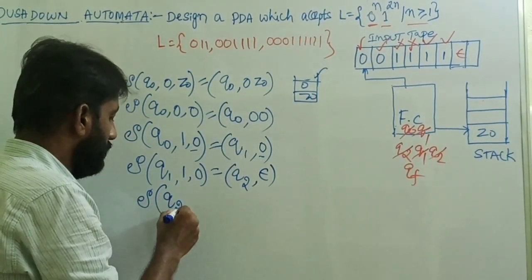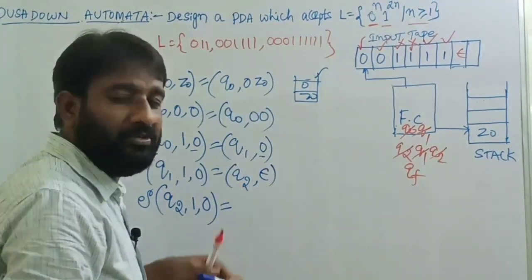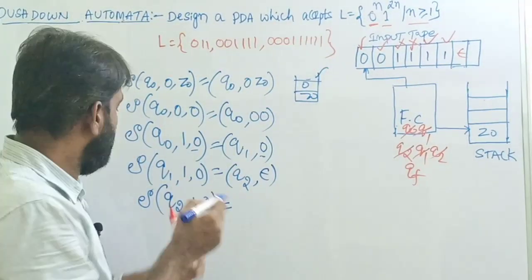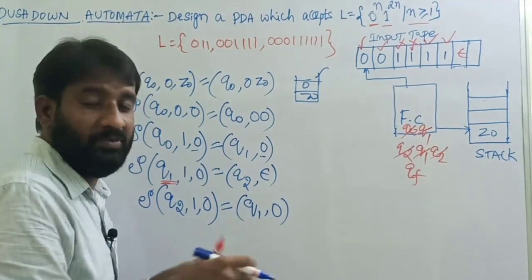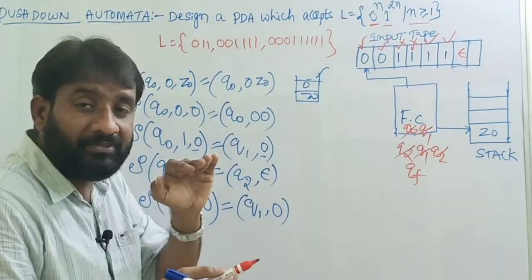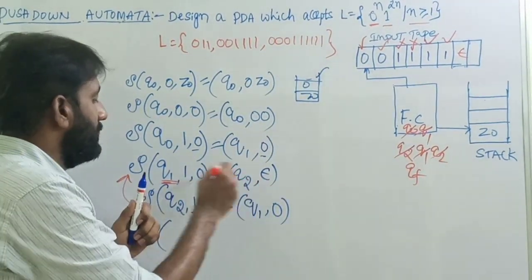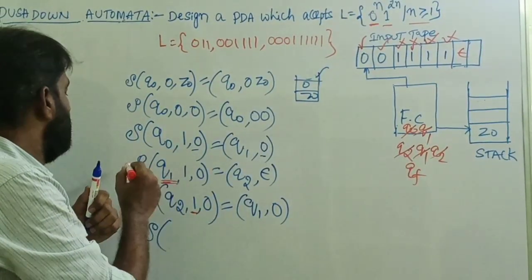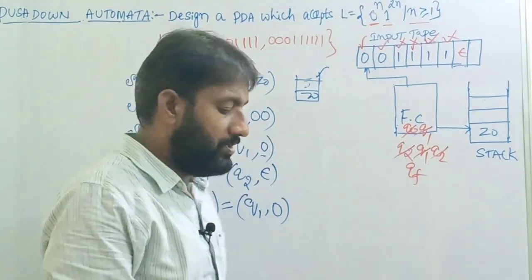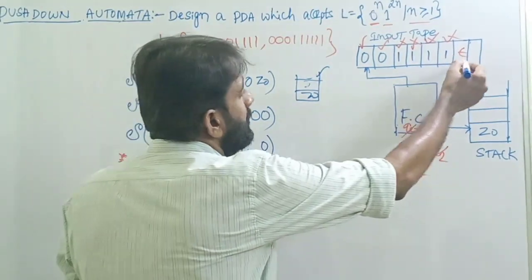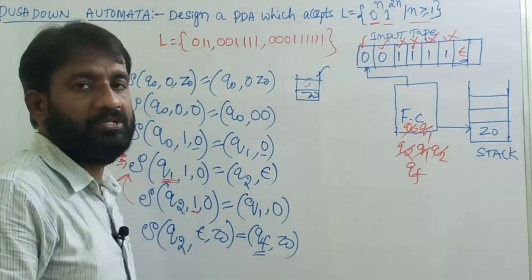After popping, there may be more ones. Transition δ(q2, 1, 0) — top of stack is zero — reset back to state q1 without push or pop: δ(q2, 1, 0) = (q1, 0). This is the most important reset step. Then again δ(q1, 1, 0) = (q2, ε) for the next pop. Finally, δ(q2, ε, Z₀) — input is epsilon, top of stack is Z₀ — move to final state without any stack operation: δ(q2, ε, Z₀) = (qf, Z₀). This completes acceptance by final state.